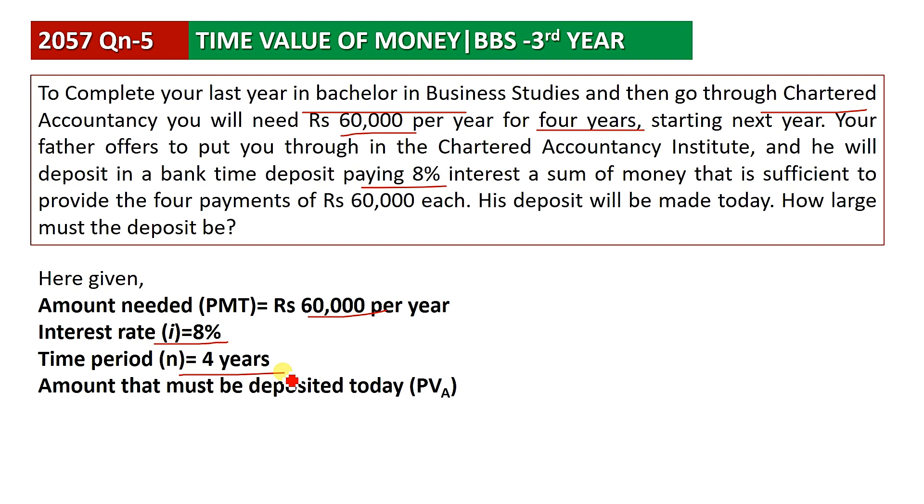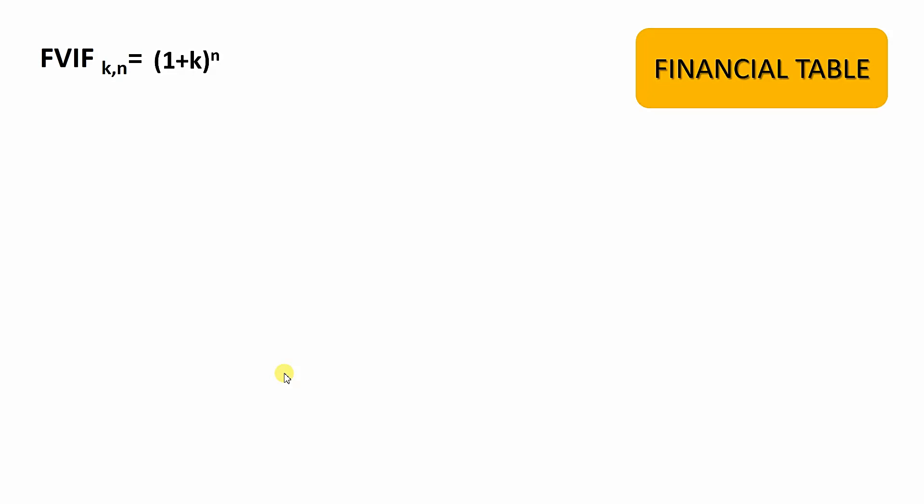The solution requires using the financial table to calculate the time value of money. We can use the Future Value Interest Factor from the financial table. The formula is 1 plus k to the power n for the future value interest factor. This value can be found in the financial table or calculated as 1 plus k to the power n.